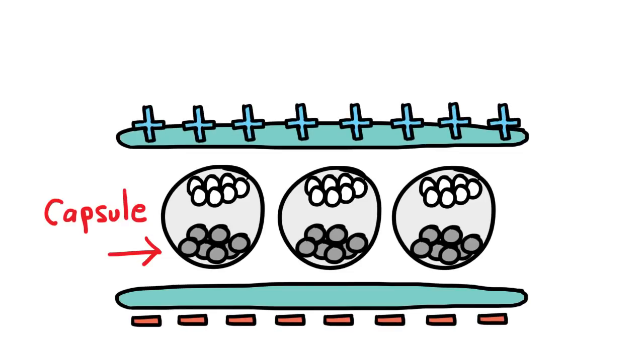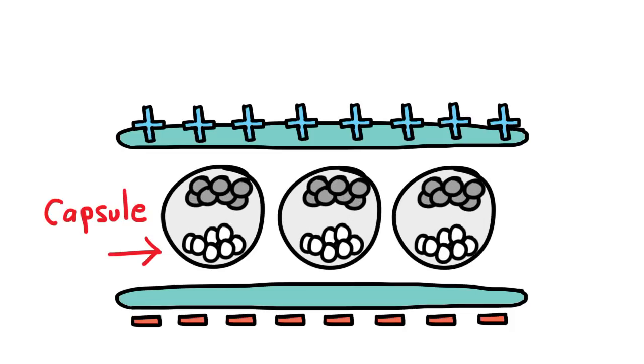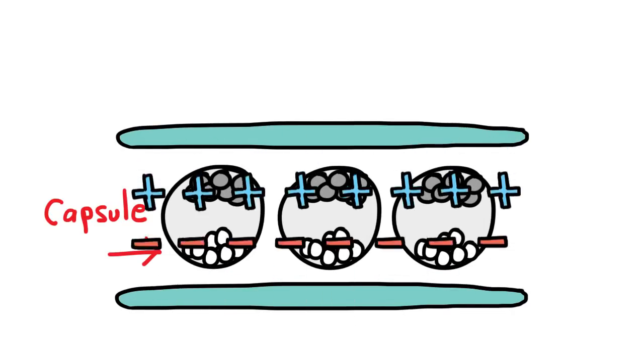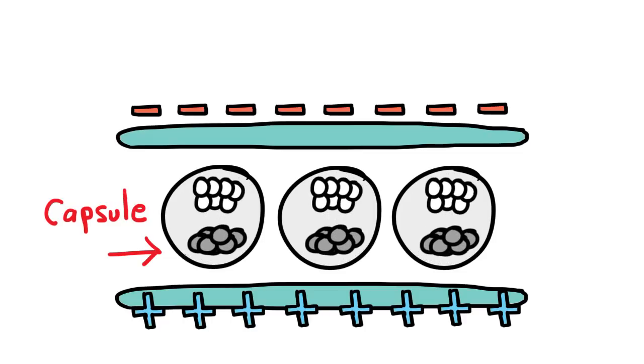When positive current is passed in the upper electrode, negatively charged black pigments are attracted to the top. And when negative charge is passed in the upper electrode, positively charged white pigments are attracted to the top.